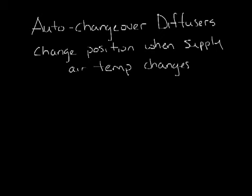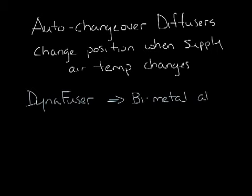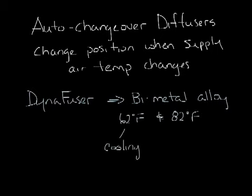Titus makes a couple auto changeover diffusers. They all do basically the same thing which is switch the airflow pattern from cooling position to heating position when they sense a change in the supply air temperature. The down diffuser was our first auto changeover slot diffuser. It uses a bimetal alloy that changes position at 62 degrees and 82 degrees Fahrenheit. So when the down diffuser sees 62 degrees supply air temperature it puts the diffuser into cooling position and directs the air across the ceiling and at 82 degrees it puts it in heating position and directs the air down the glass.